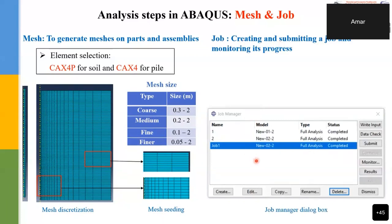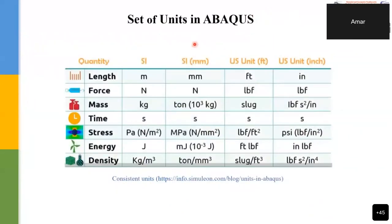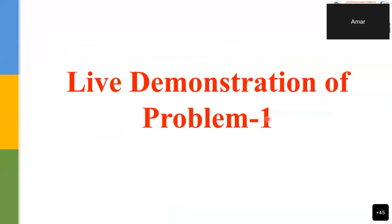The job is created and submitted in the Job Manager, where the analysis status and progress can be monitored. Before starting the demonstration, it is important to use a consistent set of units in ABAQUS. There are four possibilities; for this problem, a specific consistent unit set is adopted, and all parameters will be input accordingly.